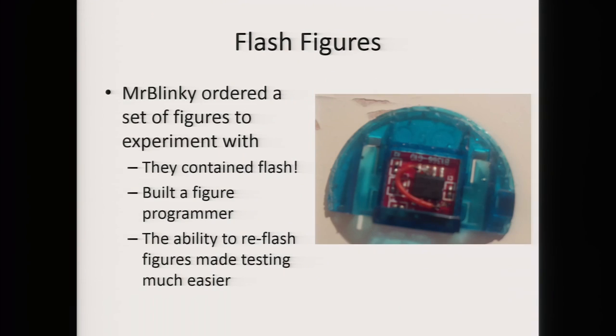This is where I was at the last Congress. Right afterwards, I was contacted by a guy called Mr. Blinky, who wanted to order his own figures and reproduce my research. But something funny happened — when he ordered his figures, they had flash in them. It turns out there are actually three types of figures: ones with unpopulated PCBs, ones with mask-ROMs, and actually a type that contains flash. What was even cooler is that you could basically just program the flash right through the contacts of the figure. All you need to do is make a programmer, and you can re-flash the figures.